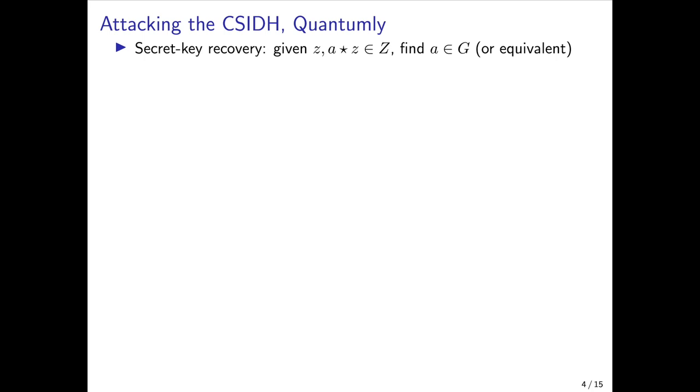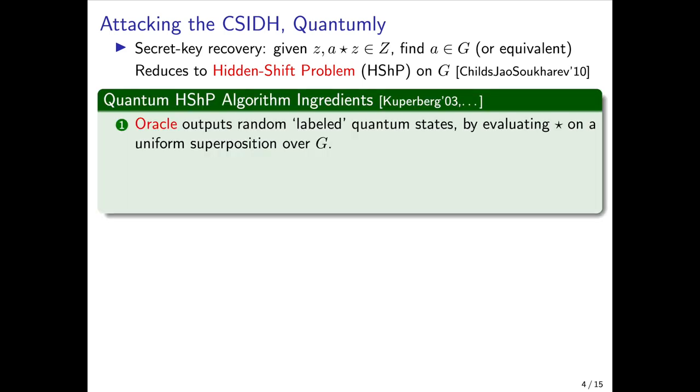The main cryptanalytic problem of secret key recovery is roughly analogous to the discrete logarithm problem. If we're given some public parameter Z and somebody's public key A star Z, then the goal is to find their secret key A, which is an element of the group. And it turns out, as observed by Childs, Jao, and Soukharev in 2010, that this task reduces to a hidden shift problem on the group G, which is a problem that turns out to have been studied going back to the early 2000s with the work of Kuperberg.